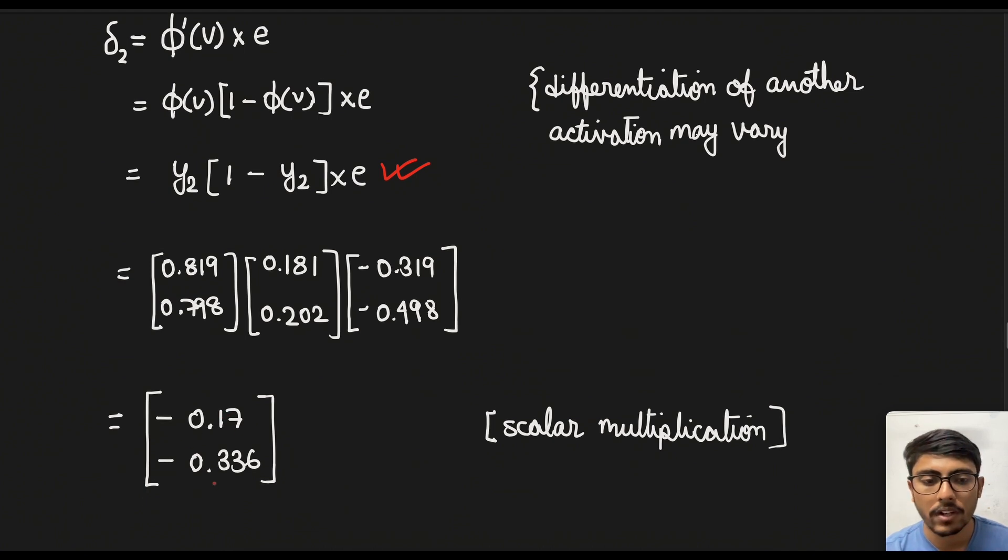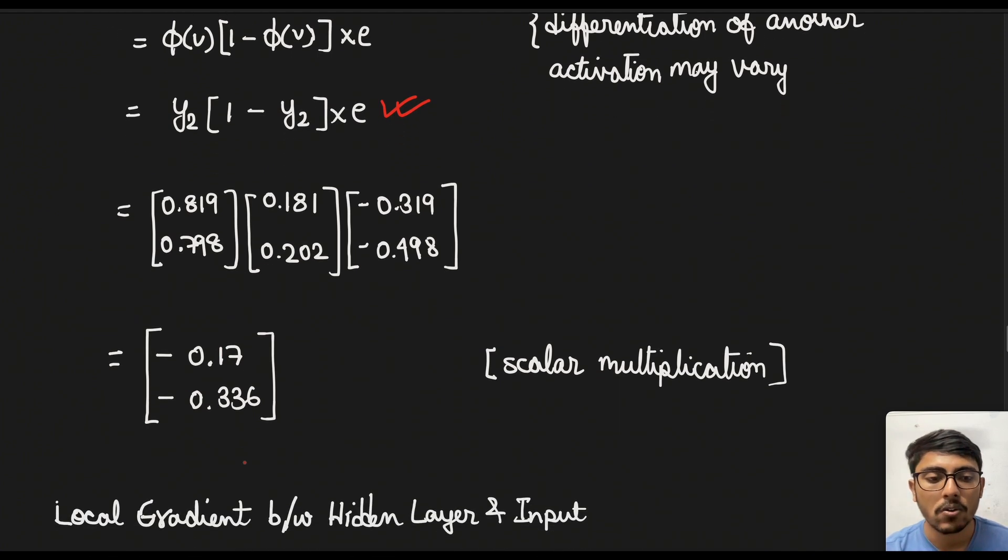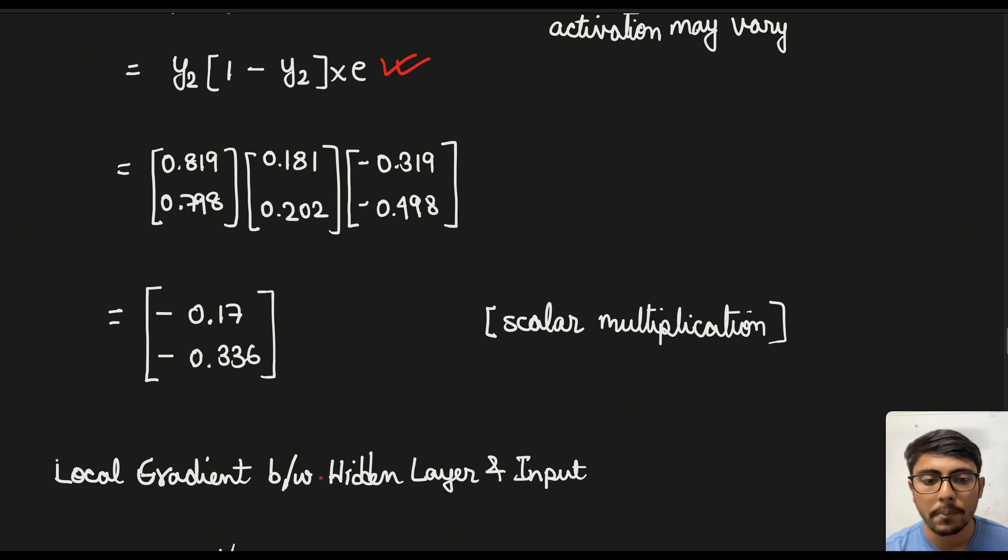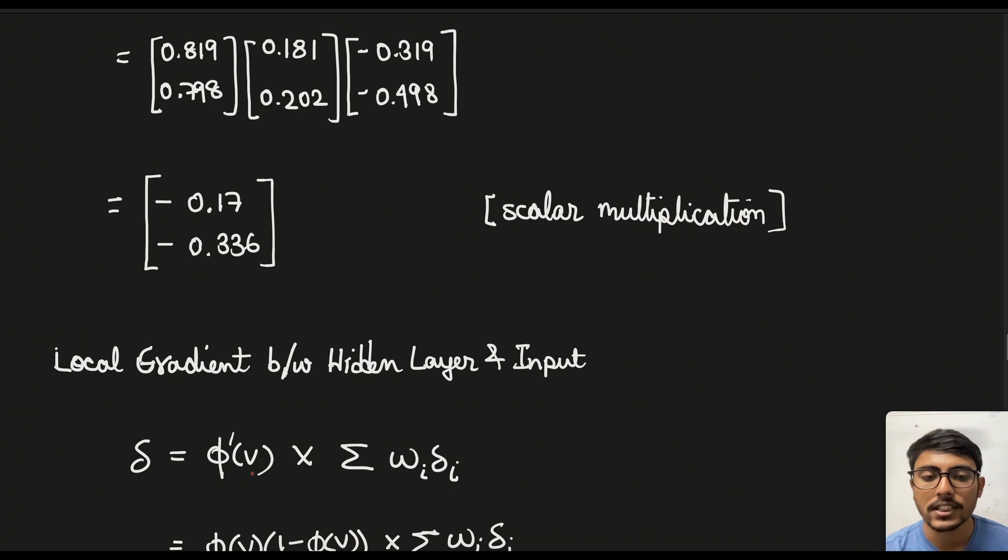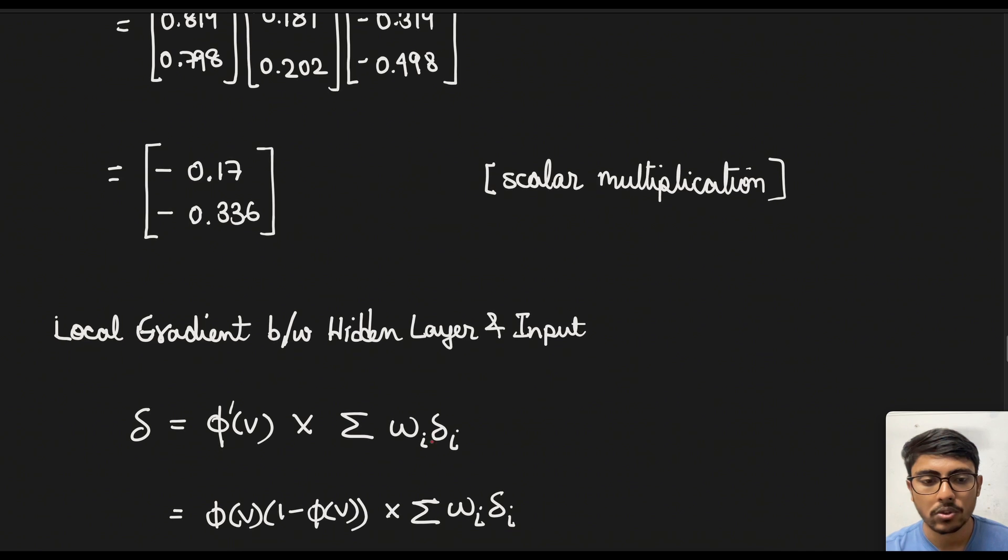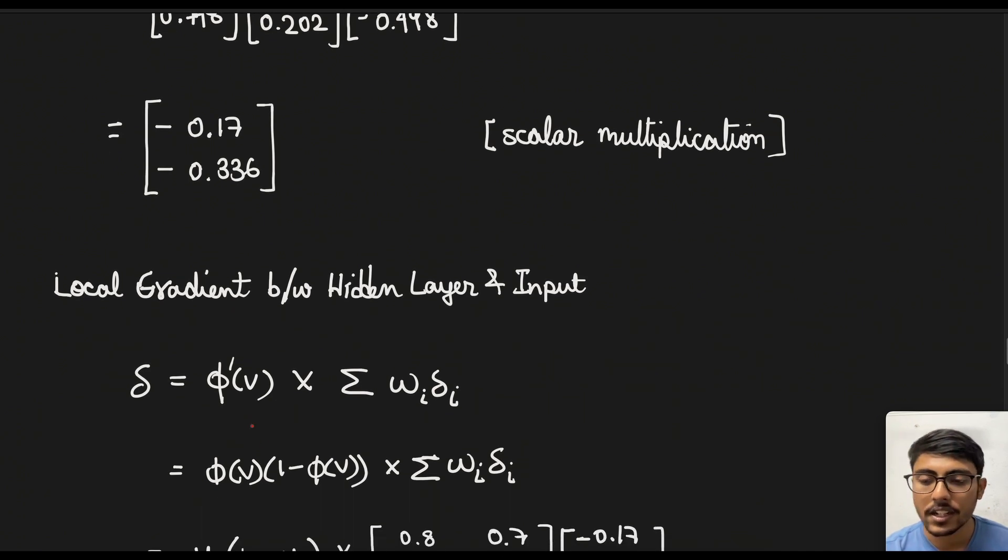Similarly the lower value. And now we come to the next part which is local gradient between the hidden layer and the input. So for that the formula is a bit changed which is φ'(v) × summation of weights × δi which is the local gradient for the last layer that we did. So in this case again the derivative will remain the same because activation function is sigmoid and we will multiply wi × δi.